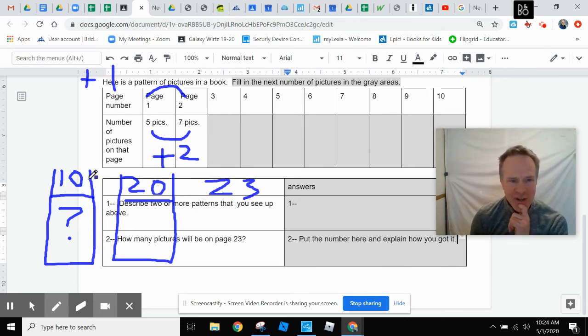When you get up to the number 10 page, this number you have here for the number of pictures, you can multiply it. 10 times 2 equals 20. So we can just multiply this number that we find out about page 10, we just multiply it times 2, and we will find out the number of pictures on page 20.